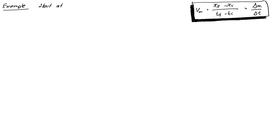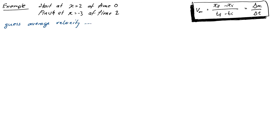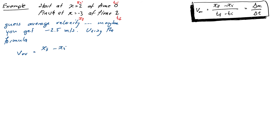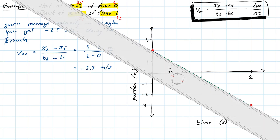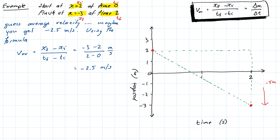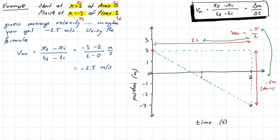For example, suppose initial position xi = 2 m, final position xf = −3 m, going from time ti = 0 s to tf = 2 s. Just looking at it, we moved left by 5 meters in 2 seconds, so we expect an average velocity of −2.5 m/s. Using the formula: v_avg = (xf − xi) / (tf − ti) = (−3 − 2) / (2 − 0) = −5/2 = −2.5 m/s. On a position–time graph, this corresponds to the slope of the line — rise over run — and because it goes downward, the rise is negative, giving a negative slope.